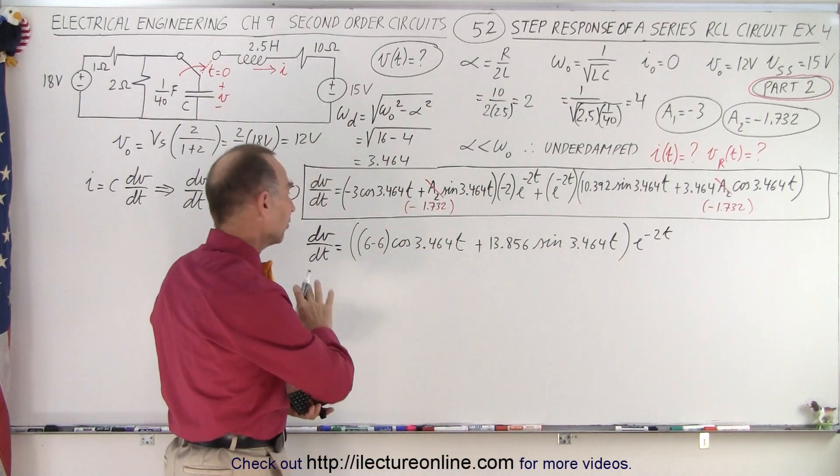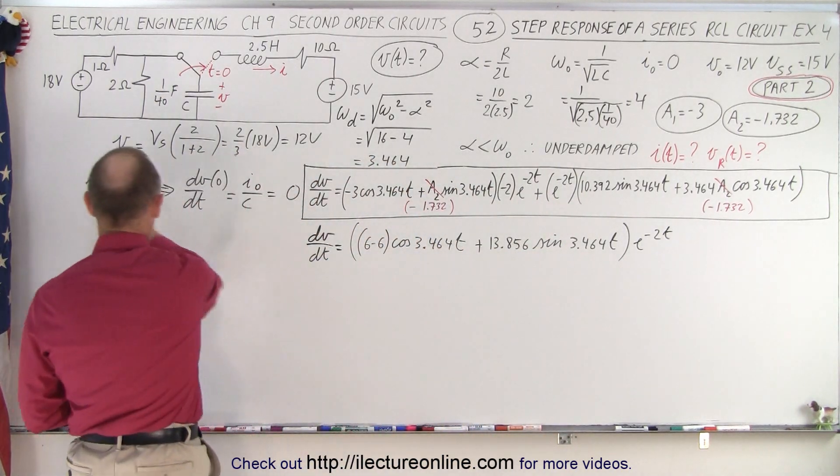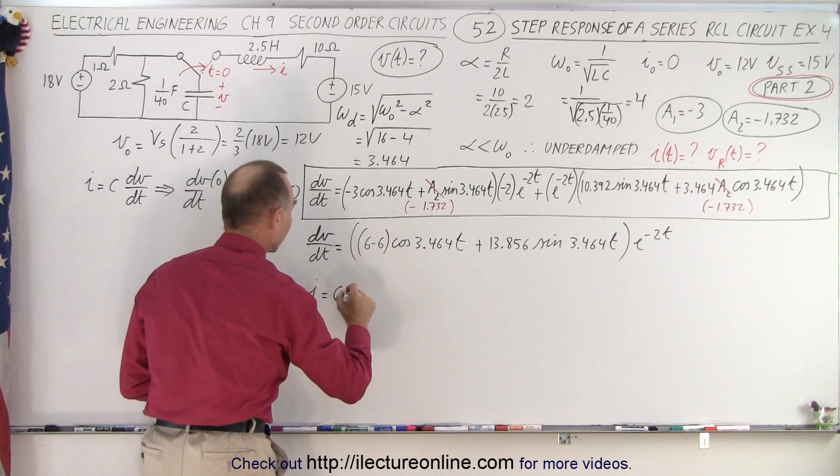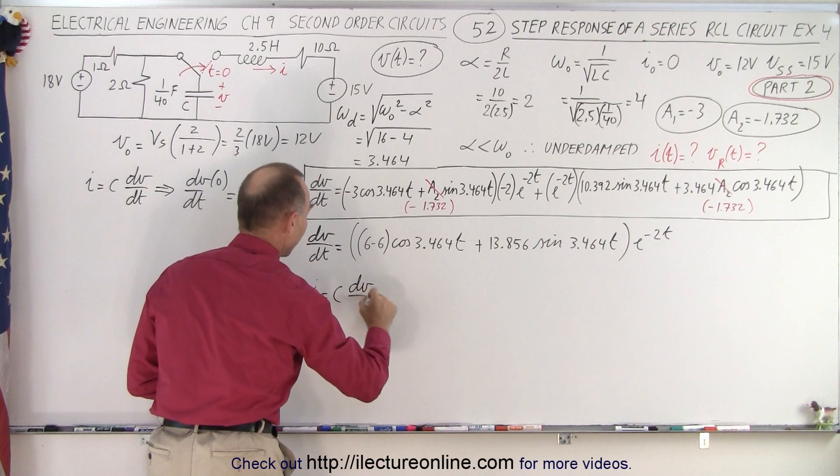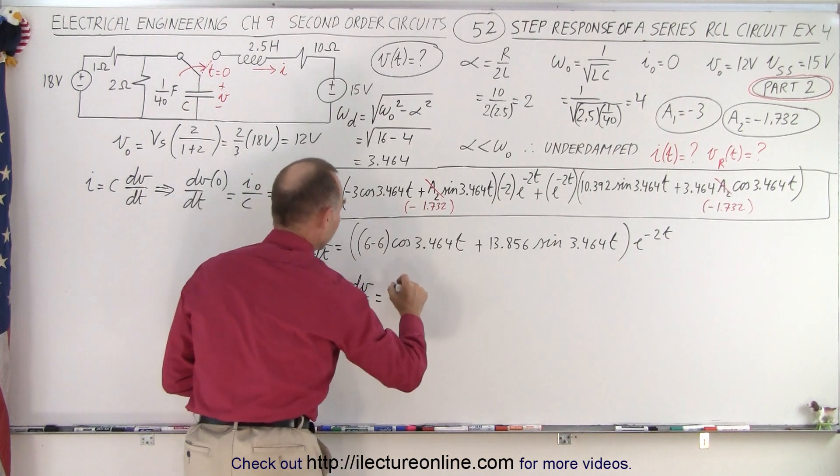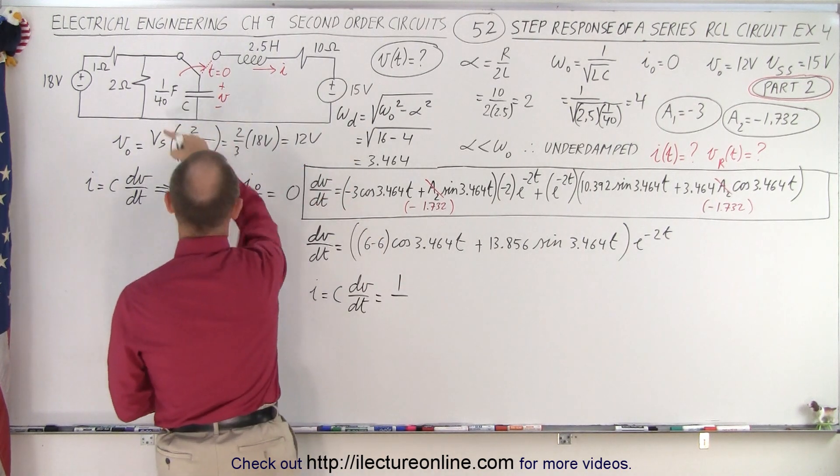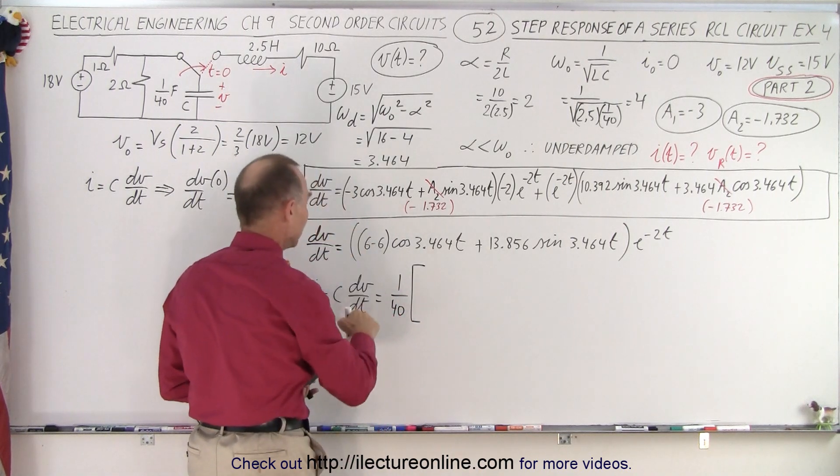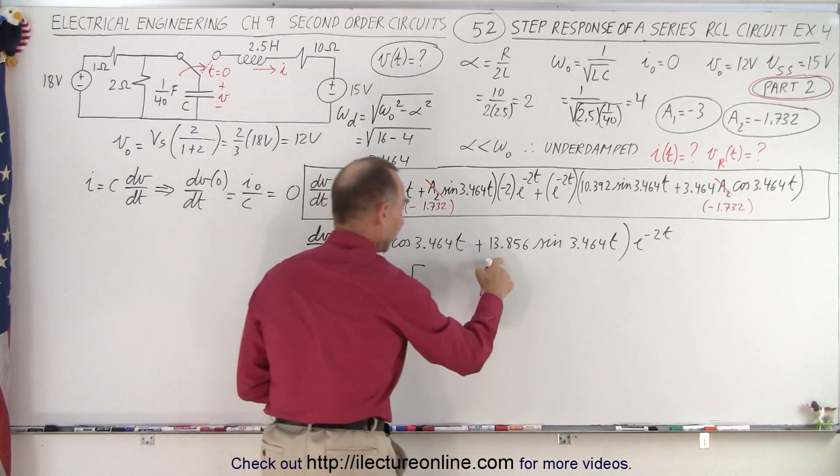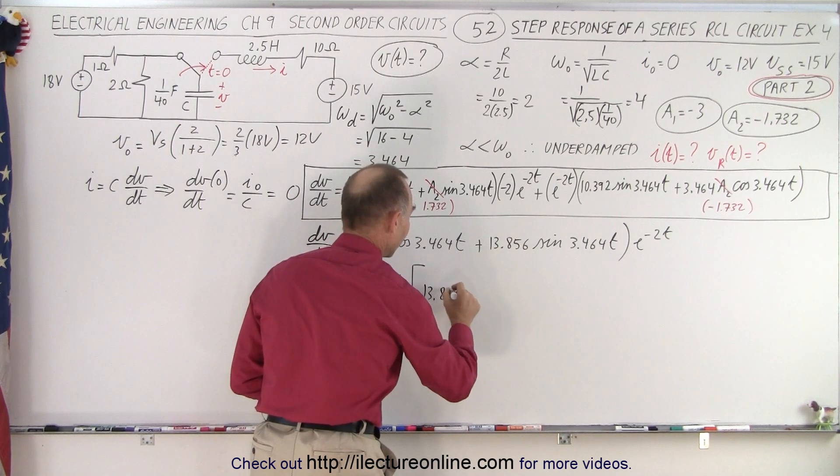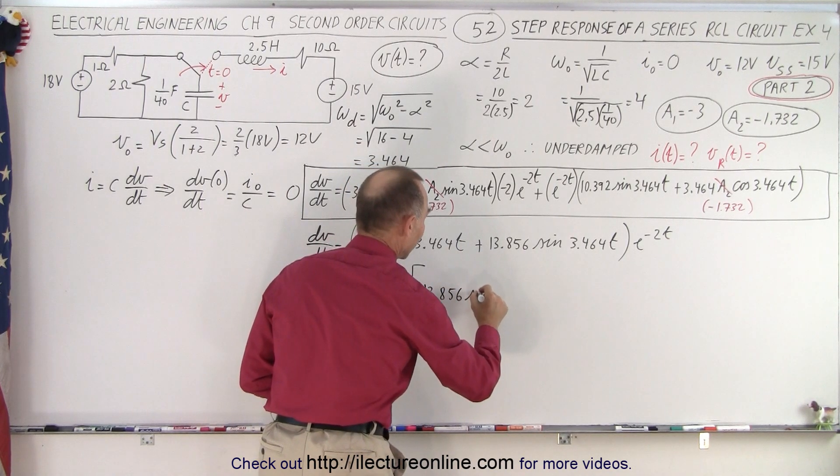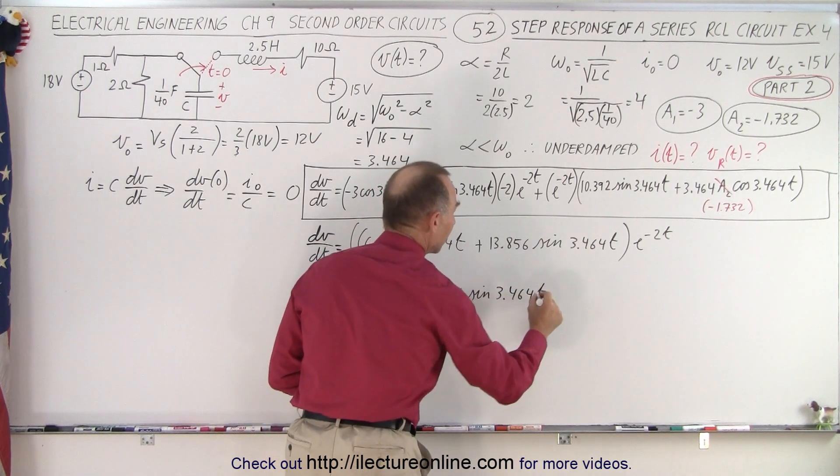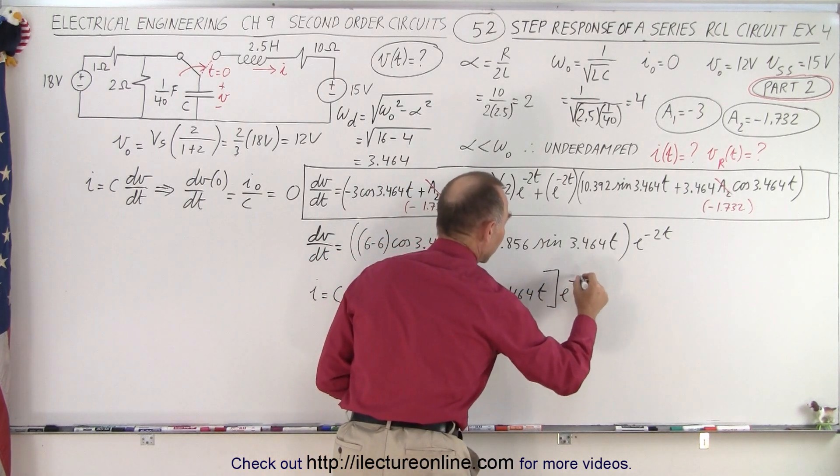So that gives us dv/dt. Now, to get the current, we need to multiply times the capacitance, so the current equals the capacitance times dv/dt, which is equal to 1/40th, because that's what the capacitance is, 1/40th times dv/dt. So this goes to 0, we're left with this,